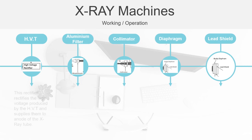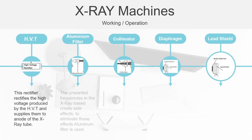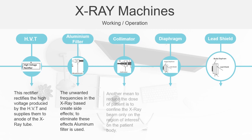The first element of the X-ray machine is the high voltage rectifier. This rectifier rectifies the high voltage produced by the high voltage transformer and supplies it to the anode of the X-ray tube where the X-rays are produced. These X-rays after being produced are passed through the aluminium filter. The unwanted frequencies in the X-ray beam create side effects; to eliminate these effects, an aluminium filter is used. The rays then pass through the collimator, whose purpose is to reduce the patient dosage by confining the X-rays only to the region of interest on the patient's body.